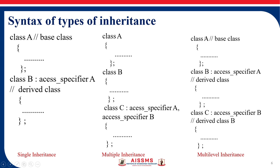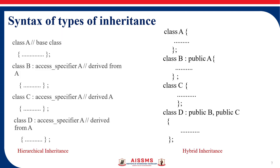Next is hierarchical inheritance. In hierarchical inheritance we have one base class and multiple derived classes. Here class A is the base class, from which we have derived class B, derived class C, and derived class D — so one base class A with three different derived classes.